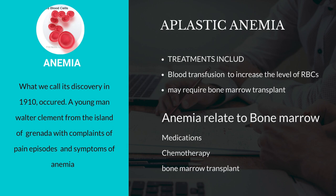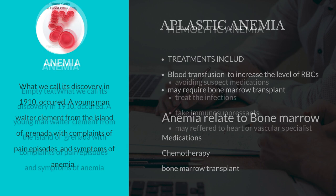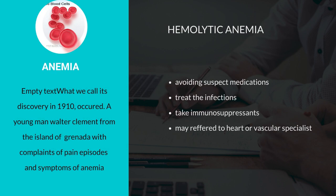Number 6, hemolytic anemia. It is one of the serious types of anemia. Treatment options are: Number 1, avoid suspect medications. Number 2, treat the infection. Number 3, take immunosuppressants.